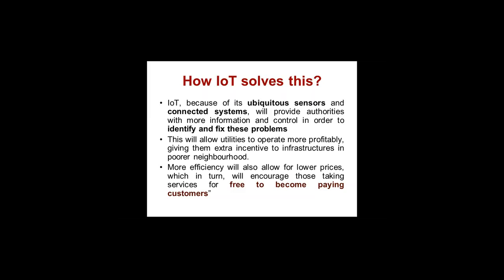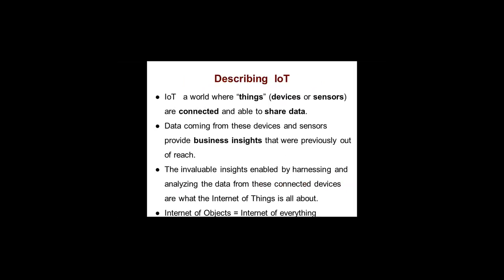IoT is a technology which can solve many problems, as shown in the Mumbai example. IoT is a world where things — devices and sensors — are connected and able to share data. In the electrical pole example, you can put a sensor, measure the usage or leakage, and connect it to the internet or a company network to share data. The essential components of an IoT system are the ability to install a sensor, collect information, and provide business insights that were previously out of reach — for example, finding out who is drawing electricity from a pole or unauthorized water from pipelines.